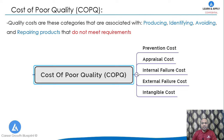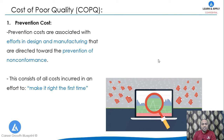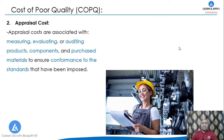The first element is prevention cost. Prevention cost consists of all costs associated with efforts in design and manufacturing directed towards the prevention of non-conformance in the product. In other words, these are costs incurred in an effort to make it right the first time. For example, this category includes costs from quality planning and engineering, new product reviews, product and process design, process control, as well as quality data acquisition and analysis.